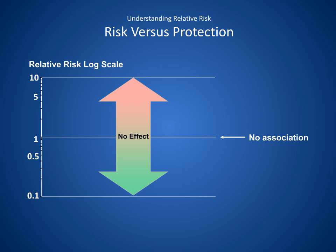If, for example, the exposed group has 20 cases of condition X and the unexposed group has only 10 cases of condition X, 20 divided by 10 equals 2. A relative risk of 2 indicates that the exposed group is twice as likely to develop condition X as the unexposed group. Any relative risk greater than 1 means that exposure increases the likelihood of developing condition X.